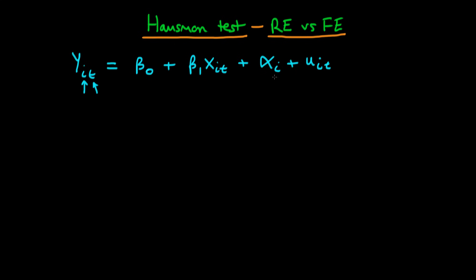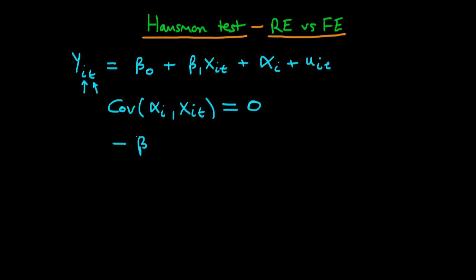Even if we don't explicitly include alpha_i in our estimation strategy, it is always going to be there. Random effects essentially assumes that the covariance of alpha_i with the independent variable x is equal to zero. If this covariance is equal to zero, both random effects and fixed effects are consistent estimators.